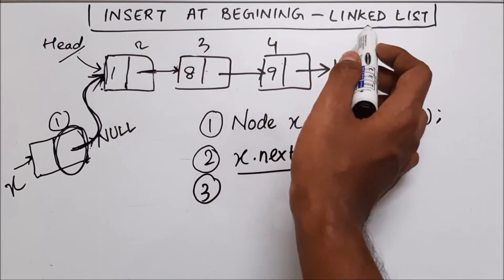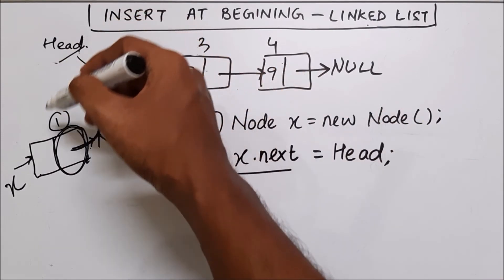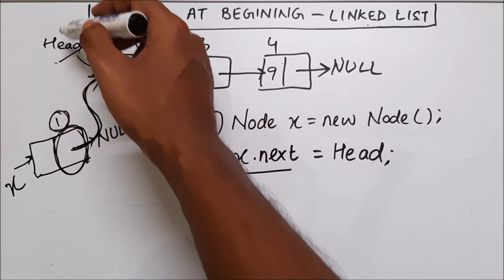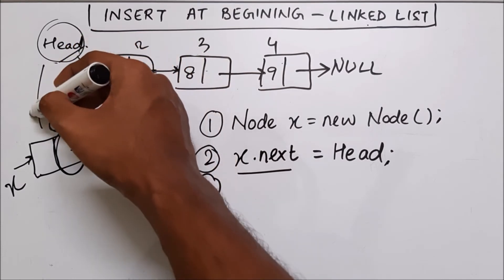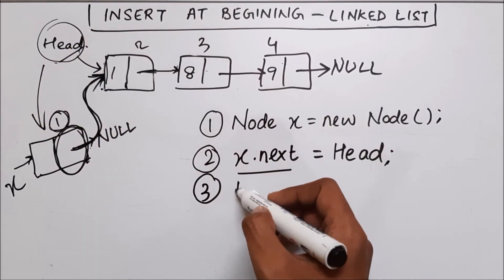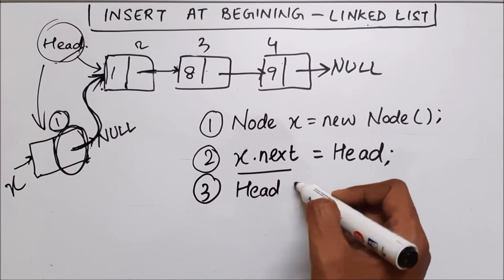So third step what we have to do is, in any linked list, the first node of the linked list should be denoted by head. So we have to make head to point over here. So how we will do that, we will say head equal to x.